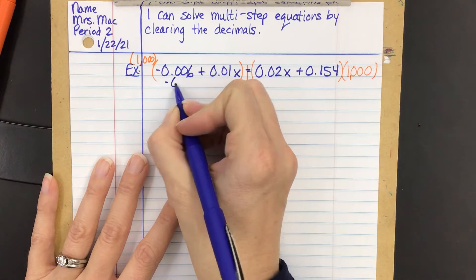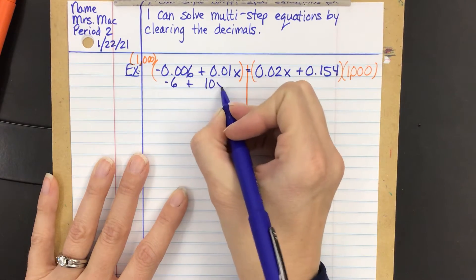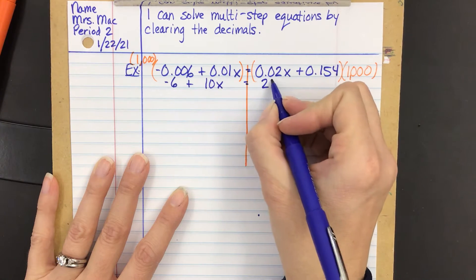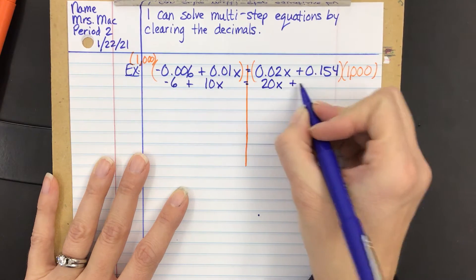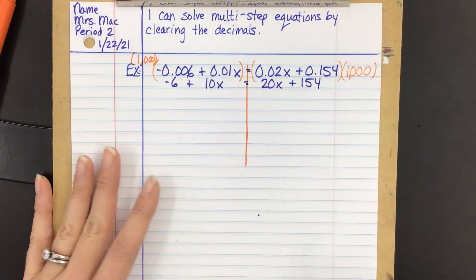So this will become negative 6. And this will become 10x. This will become 20x. And this will become 154.